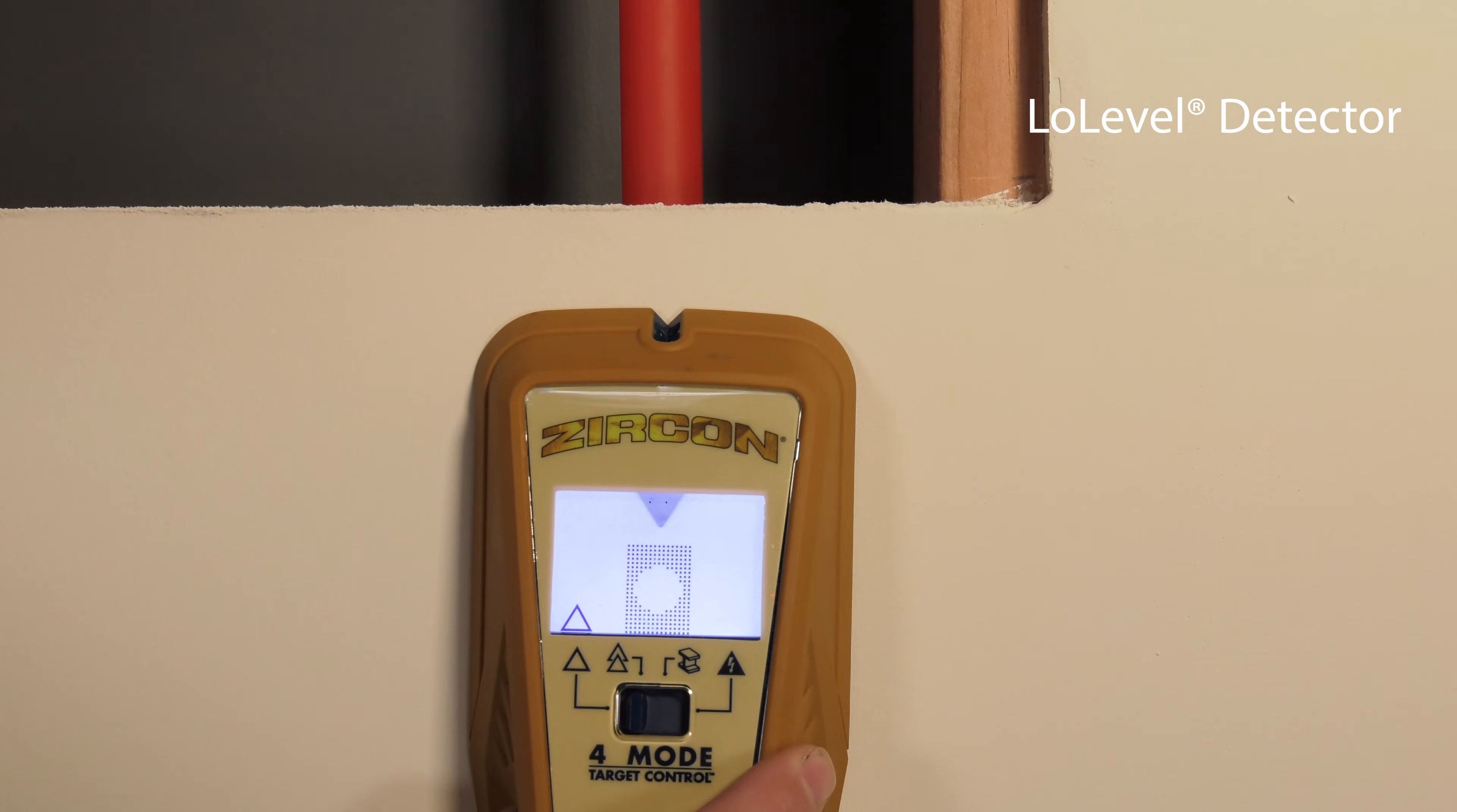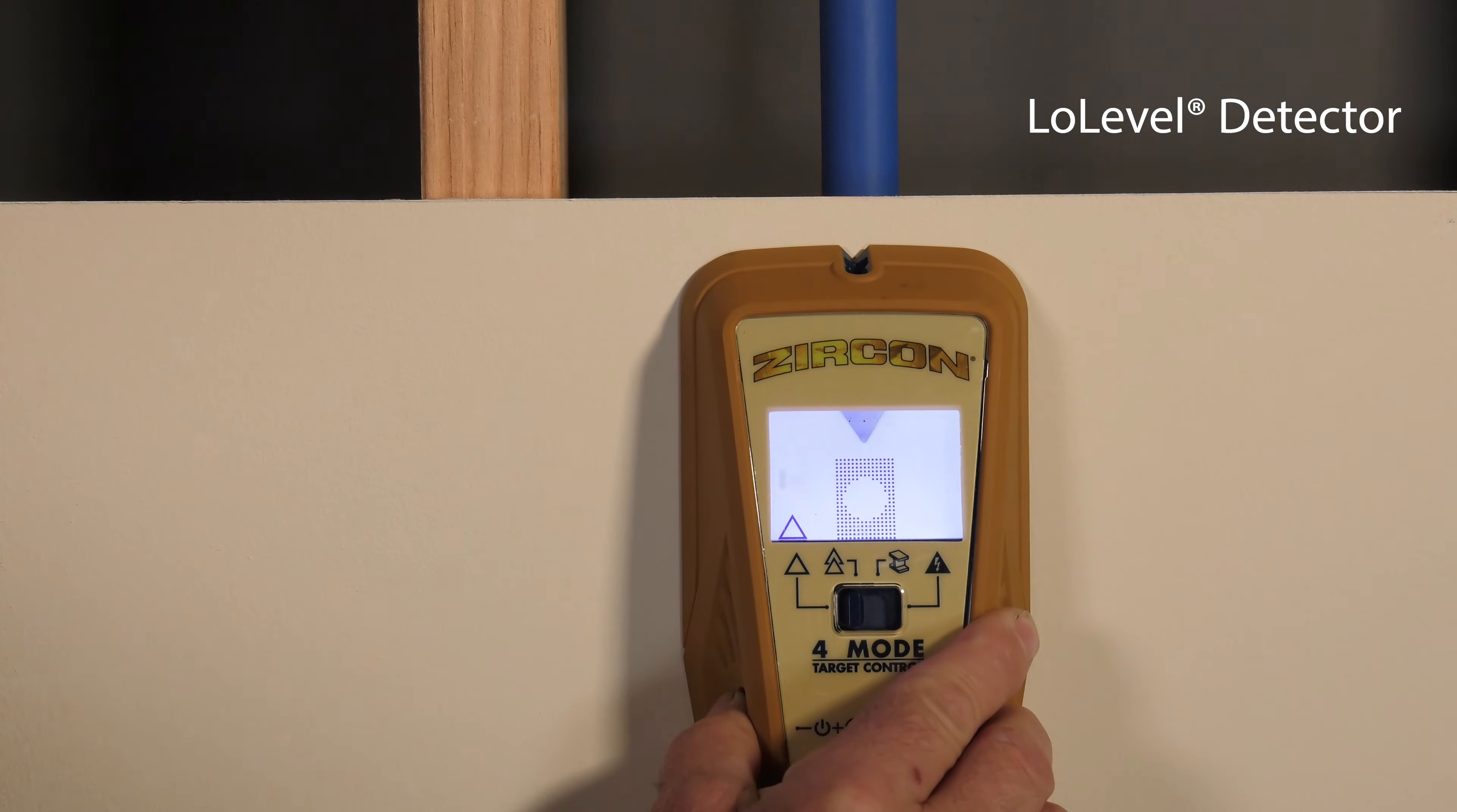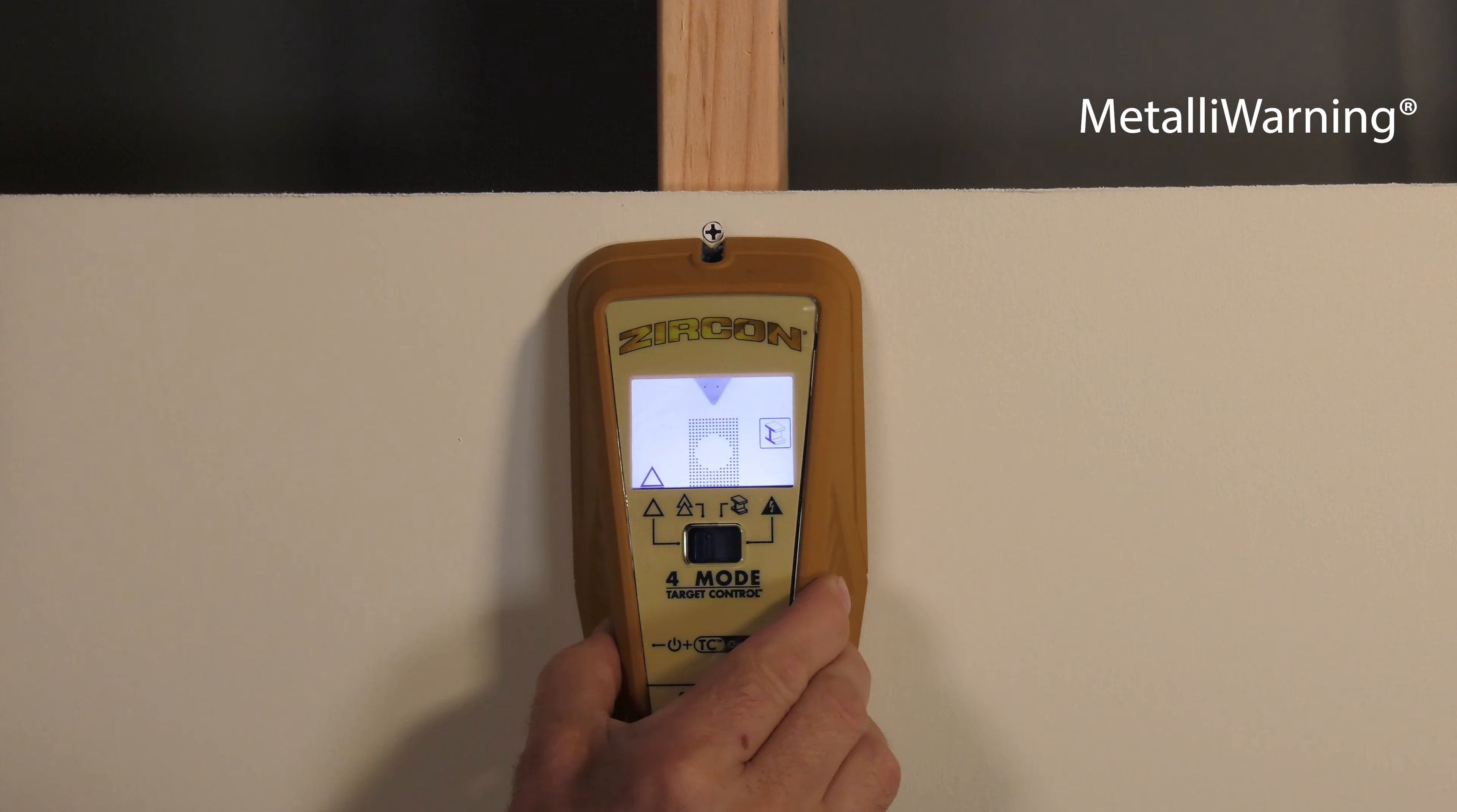When compared to stud signals, the low level indicator may help differentiate studs from false positive stud indications. If you do not receive any stud indications, the tool may be passing over metal embedded in the wood stud, like a screw or protector plate.